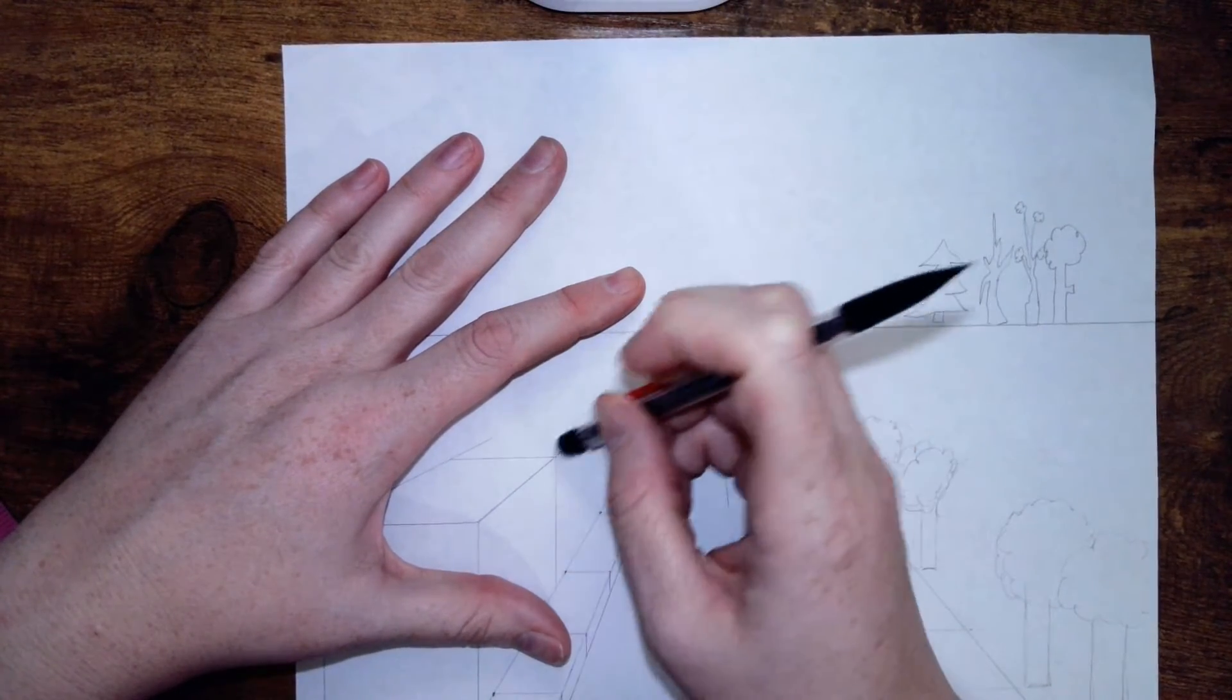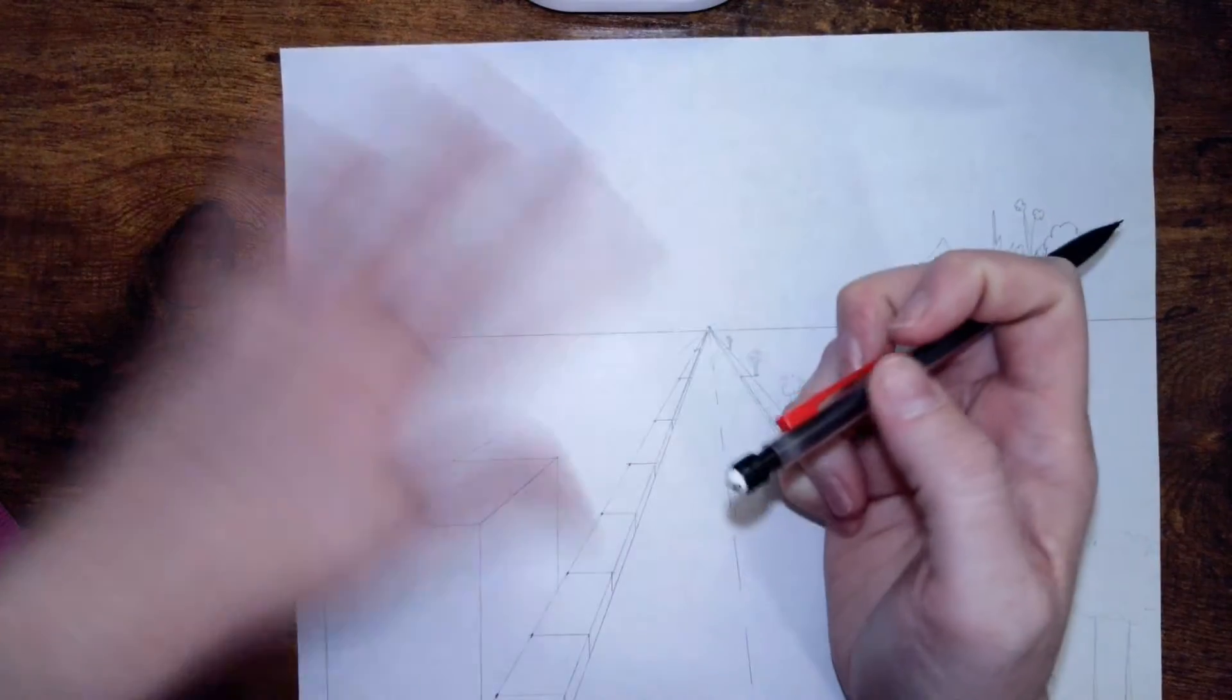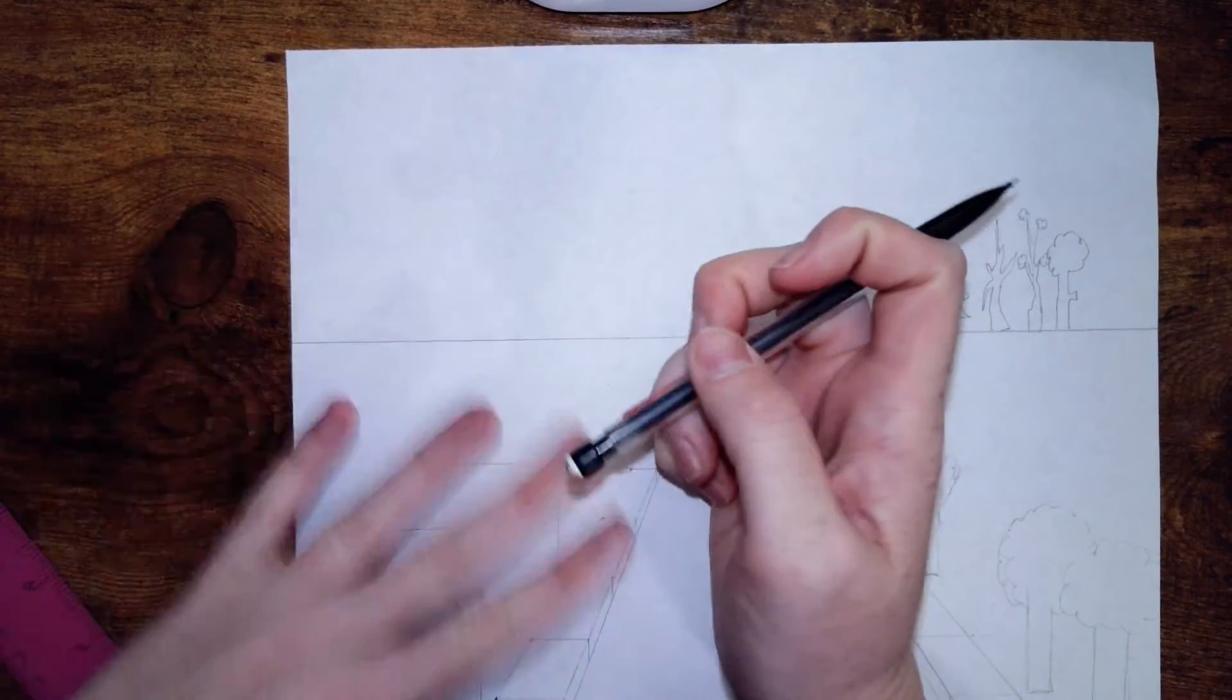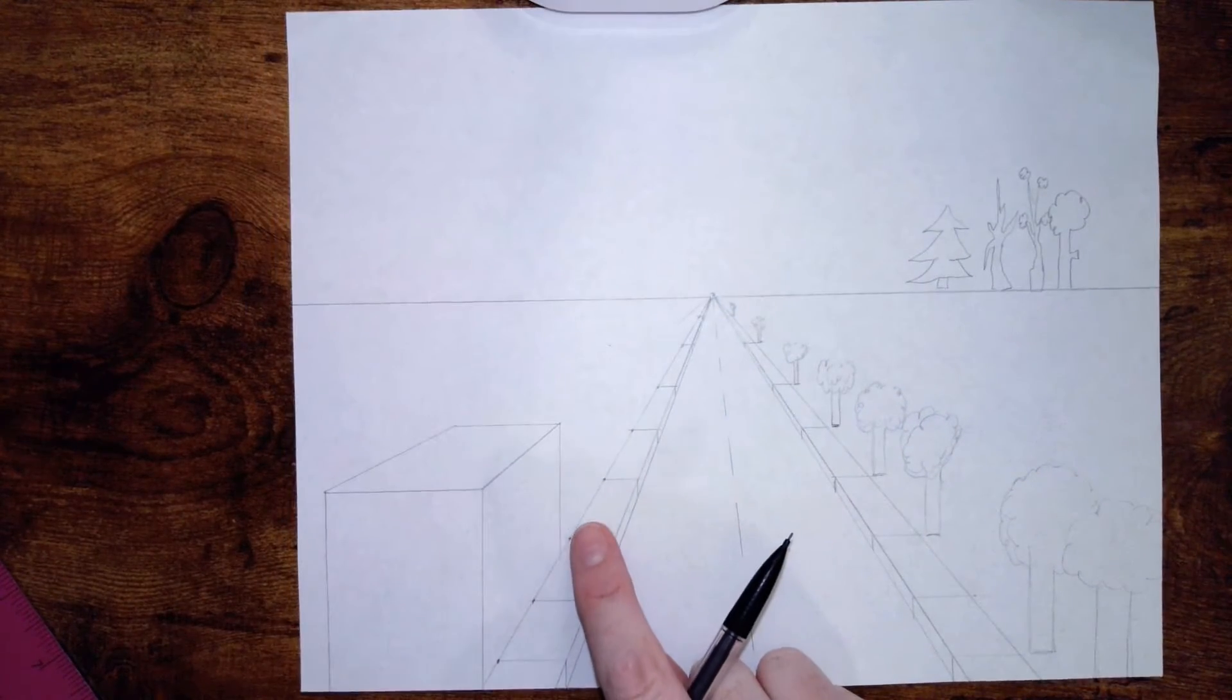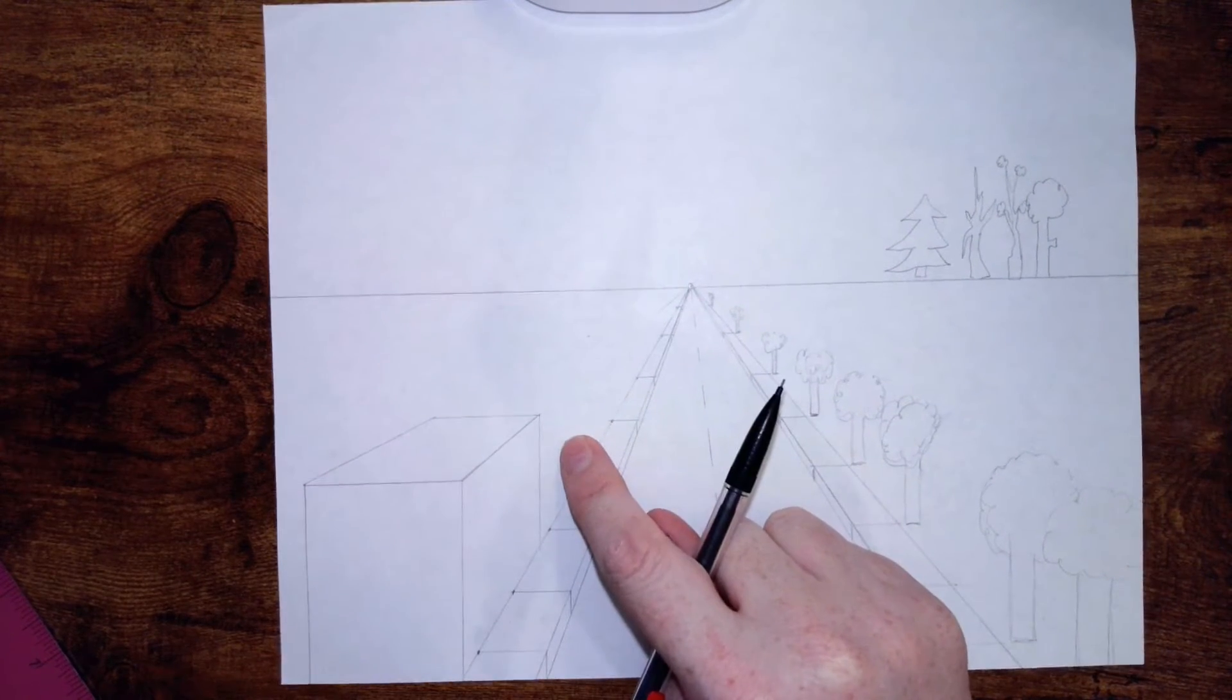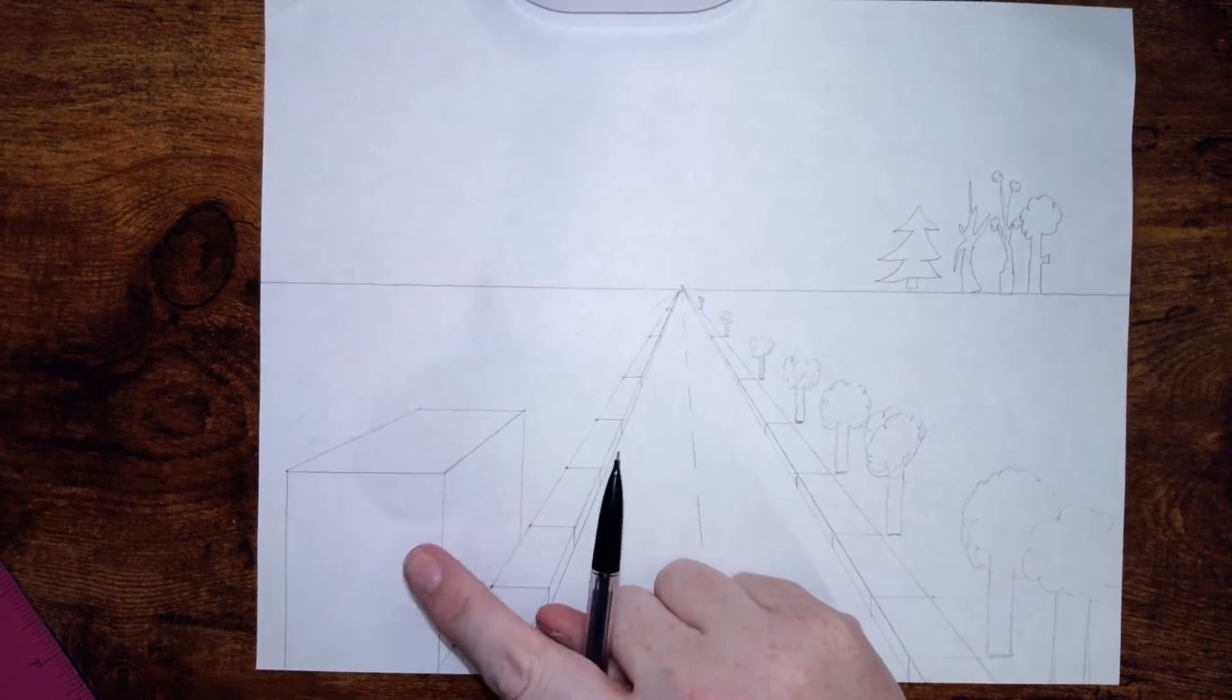We can erase our vanishing lines. We do not need them. Be careful not to erase this corner because we need it. Now we're going to add our second building overlapping this one, or going behind this one. So this building will be overlapping the back building, and we're going to make sure to add an alleyway.